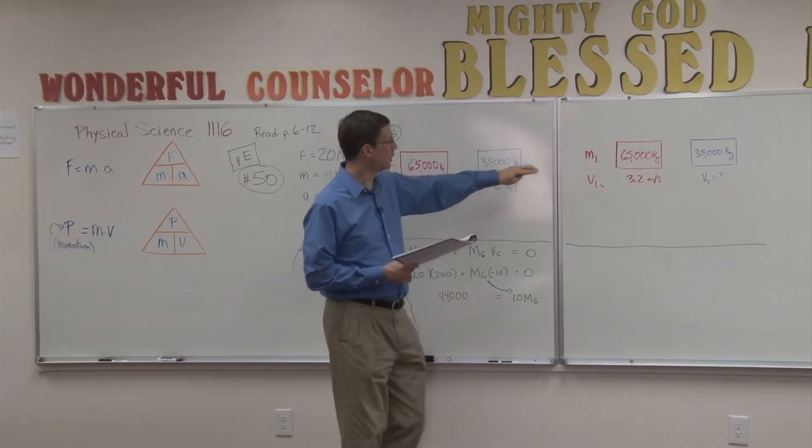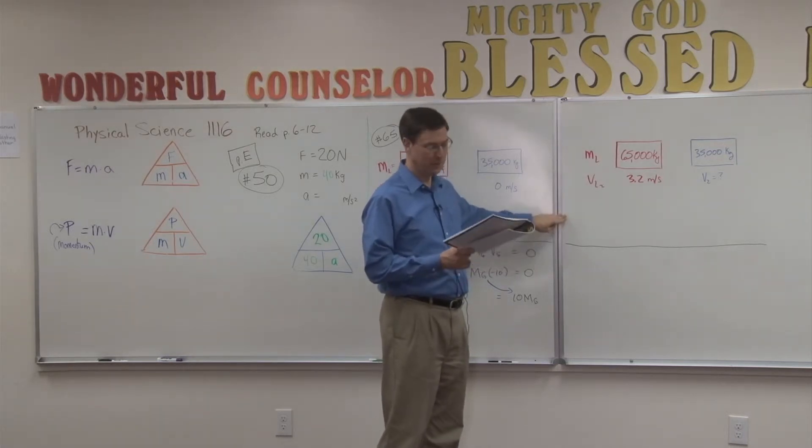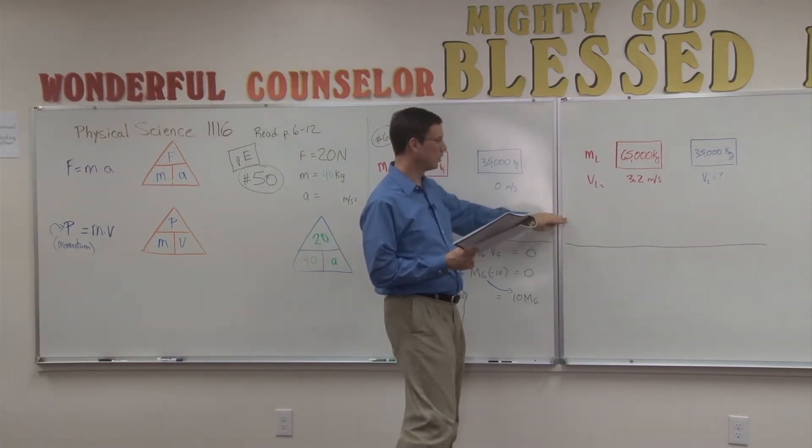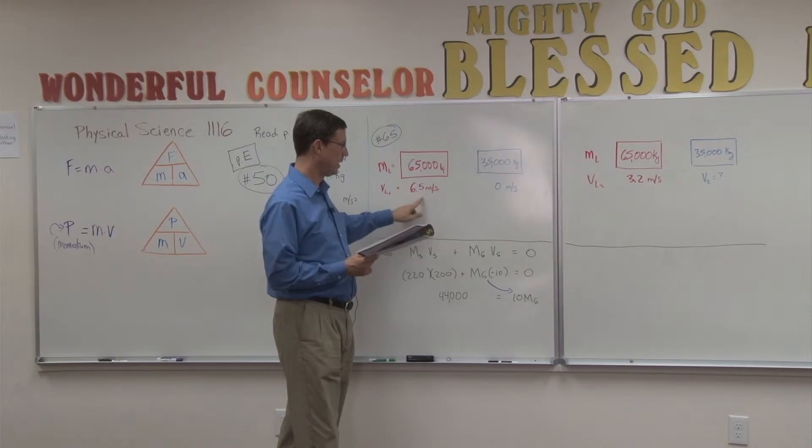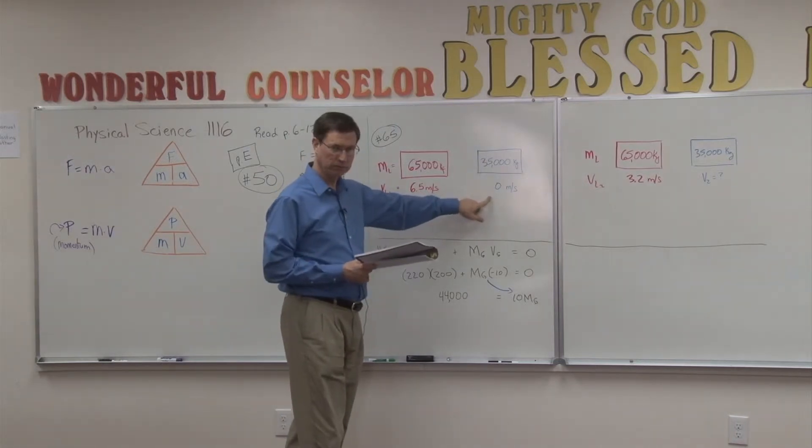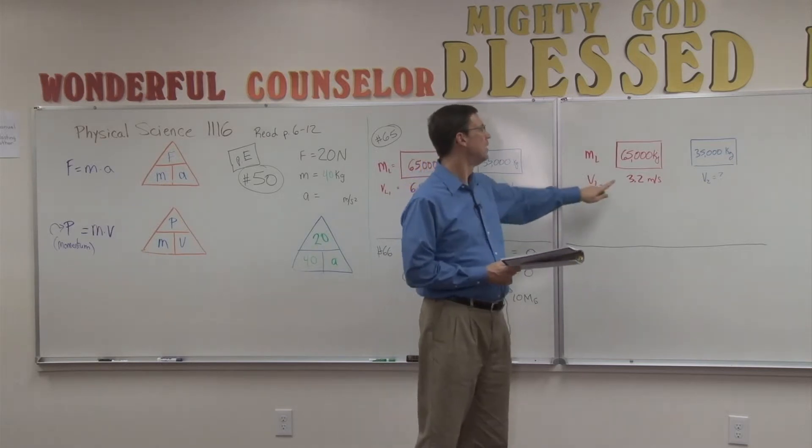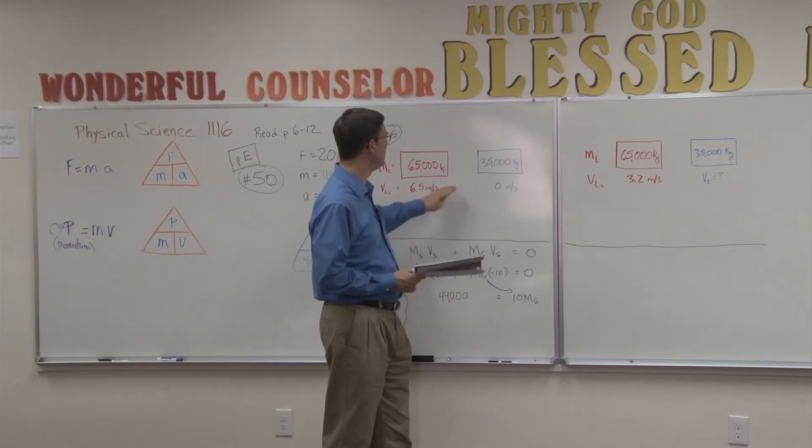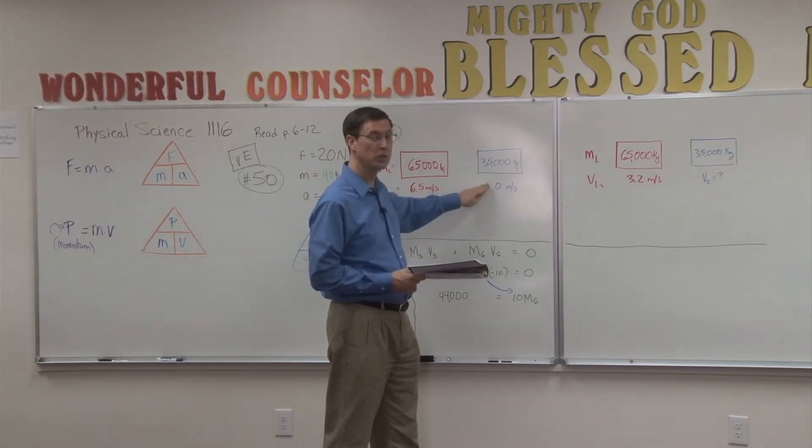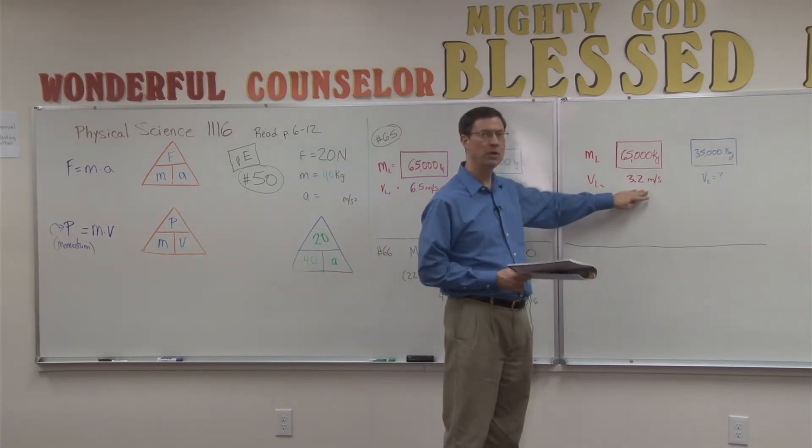Before the collision, so we're going to let this divider right here represent the collision. Before the collision took place, this car was moving at a velocity of 6.5 meters per second. The other car was not moving at all. After the collision, the fully loaded car has slowed down. You see that? Some of its speed is getting transferred to the empty car, and the fully loaded car has slowed down.